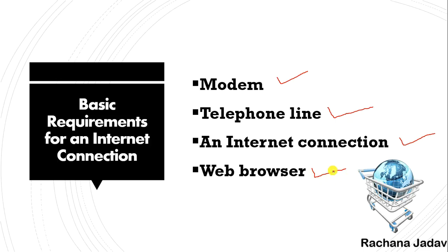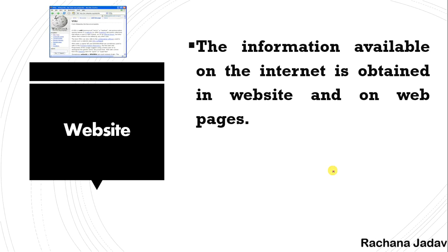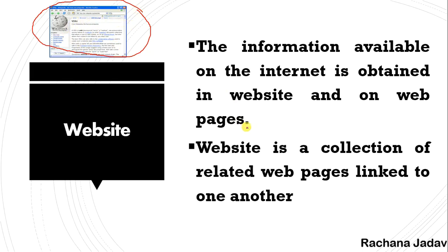Now, website — the information available on the internet is obtained on websites and web pages. When you search something and click on a link, a big page opens up. For example, you can see Wikipedia here — that page is the website with its web pages.